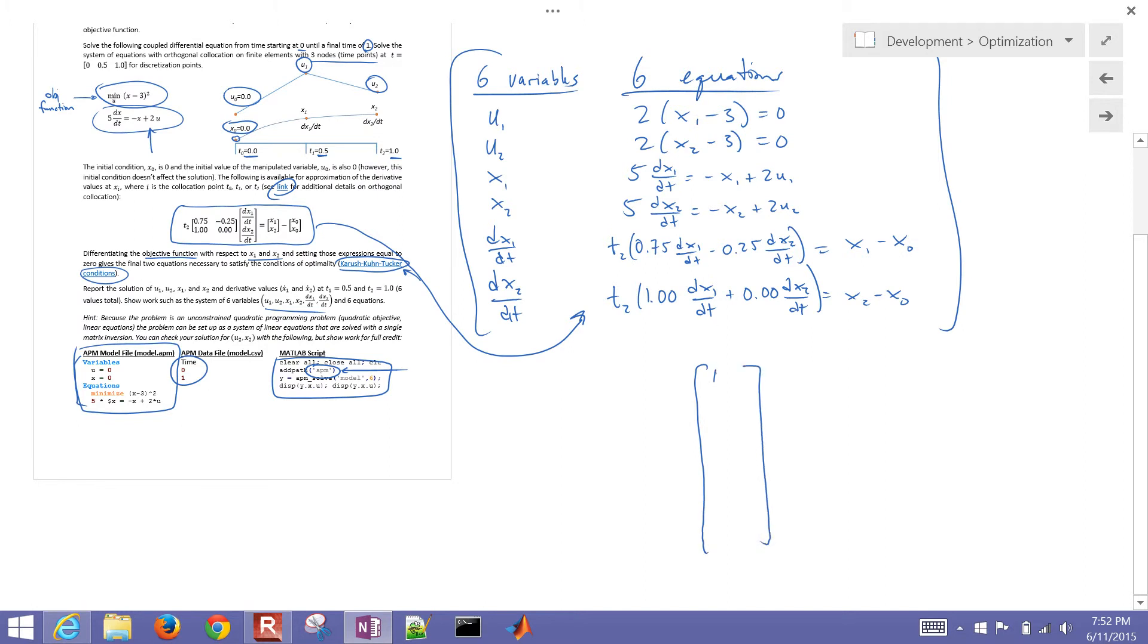So my first term is going to be dx1/dt, dx2/dt. Okay, and then I'm going to have x1, x2, u1, and u2. And I'm going to have a matrix right here and then set it equal to the right hand side.